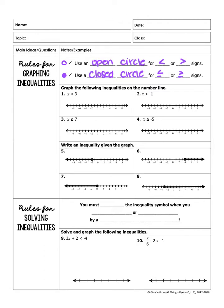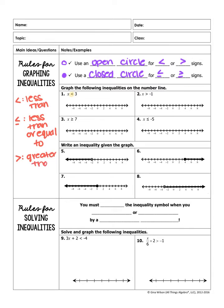We're going to graph the following inequalities on the number line. But first, let's take a minute to review inequality symbols. This means less than. When you have a less than with a line under it, that's less than or equal to. Then we have greater than — it's like it's eating the bigger number. And lastly, we have greater than or equal to.